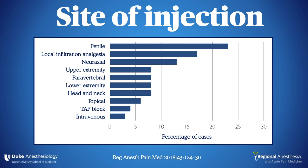The site of injection seems to matter too. A commonly taught list ranked injection sites by potential for systemic absorption, starting with intercostal and epidural and ending with subcutaneous. More recent case reports suggest that procedures such as penile blocks in children and local infiltration analgesia for joint replacement are bigger culprits — probably due to inattention to dosing limits relative to patient size. Neuraxial, upper extremity, and paravertebral blocks are still high on the list.